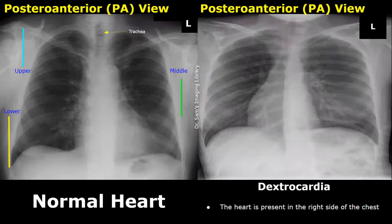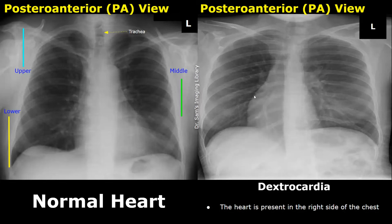Dextrocardia is a rare condition in which the heart is present on the right side of the chest. It can be easily seen on an X-ray when proper image processing is done. The apex of the heart is towards the right side, so we can see the heart is present in the right side of the chest in this image.